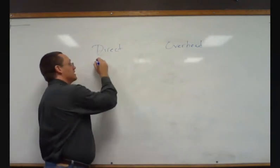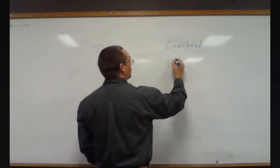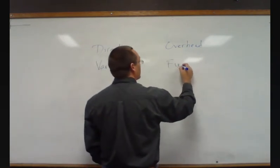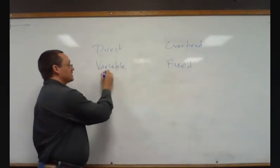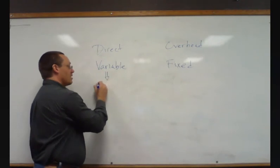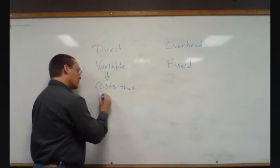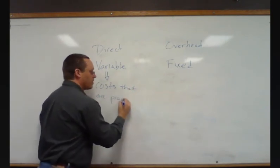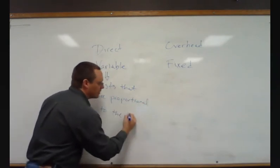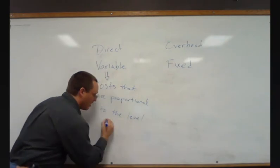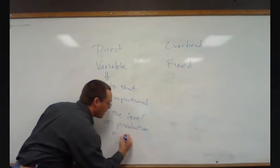Economists generally use the phrase variable cost versus fixed cost. Mostly the distinction here is the same. Variable costs are costs that are proportional or vary to the level of production or activity.